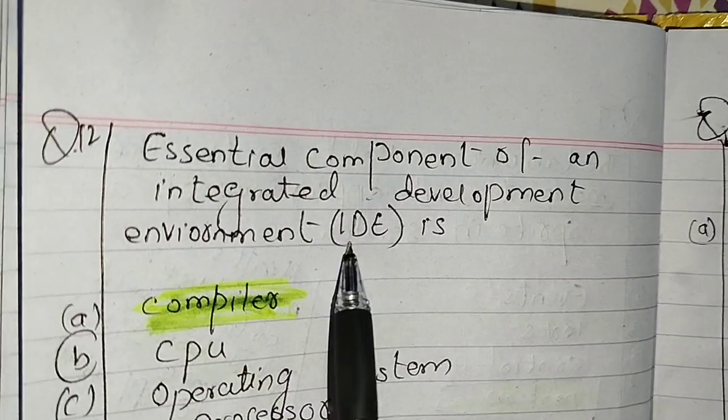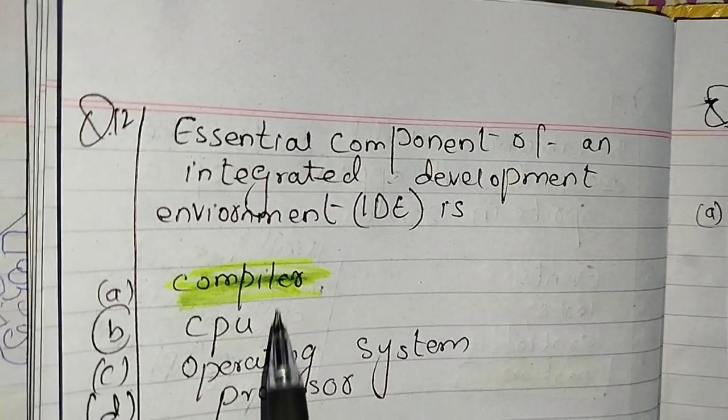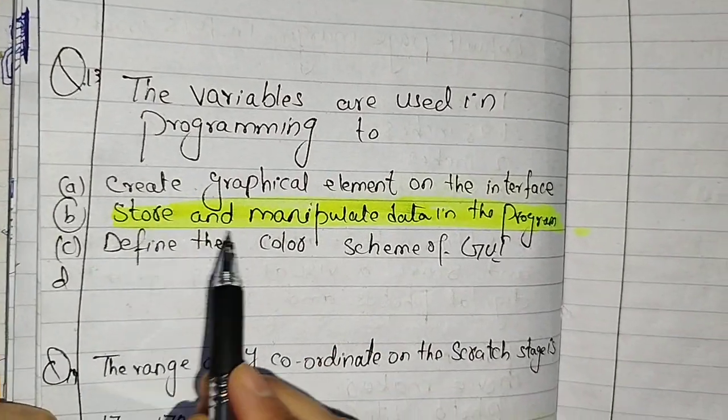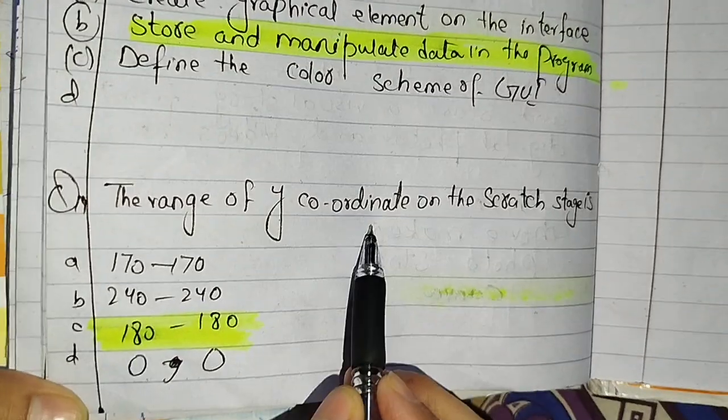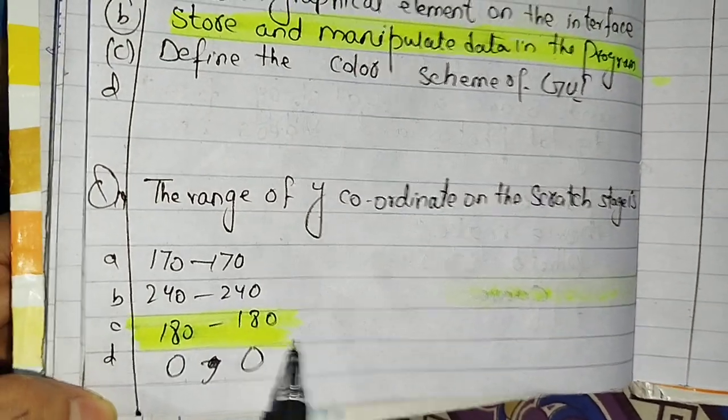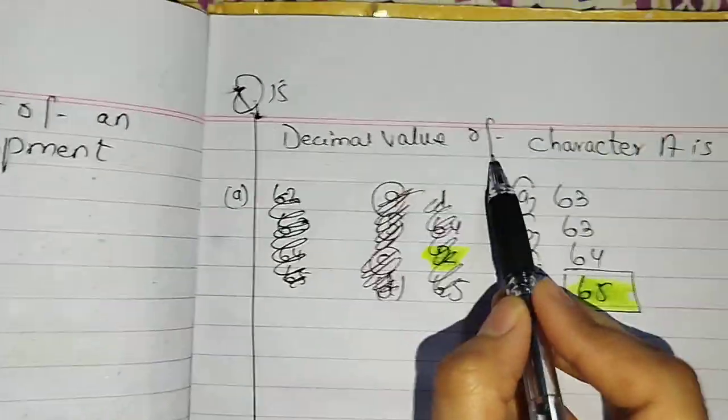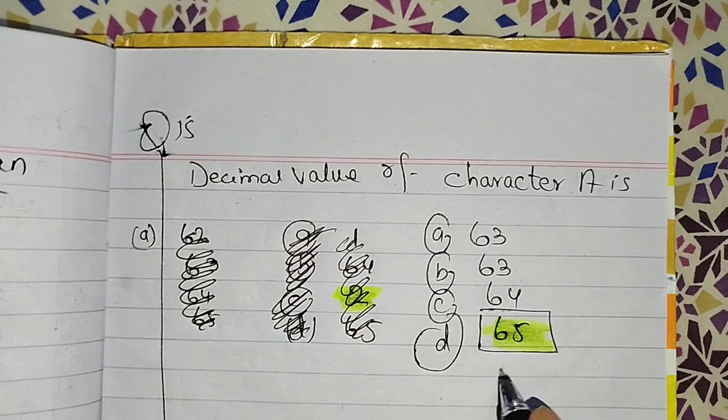Variables are used in programming to store and manipulate data in the program. The range of y-coordinate 182 to 180. Next, the decimal value of character A is 65.